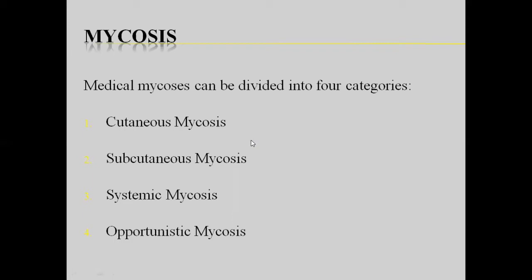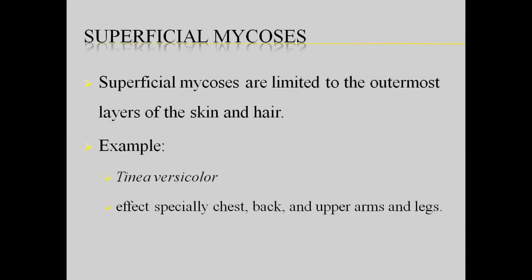There are four major classifications of mycoses — fungal diseases. First, cutaneous mycoses, as the name indicates, involves the skin. Second, subcutaneous mycoses, where the disease occurs under the skin layer. Third, systemic mycoses, where body systems and organs are involved. And fourth, opportunistic mycoses, which we will discuss in detail.